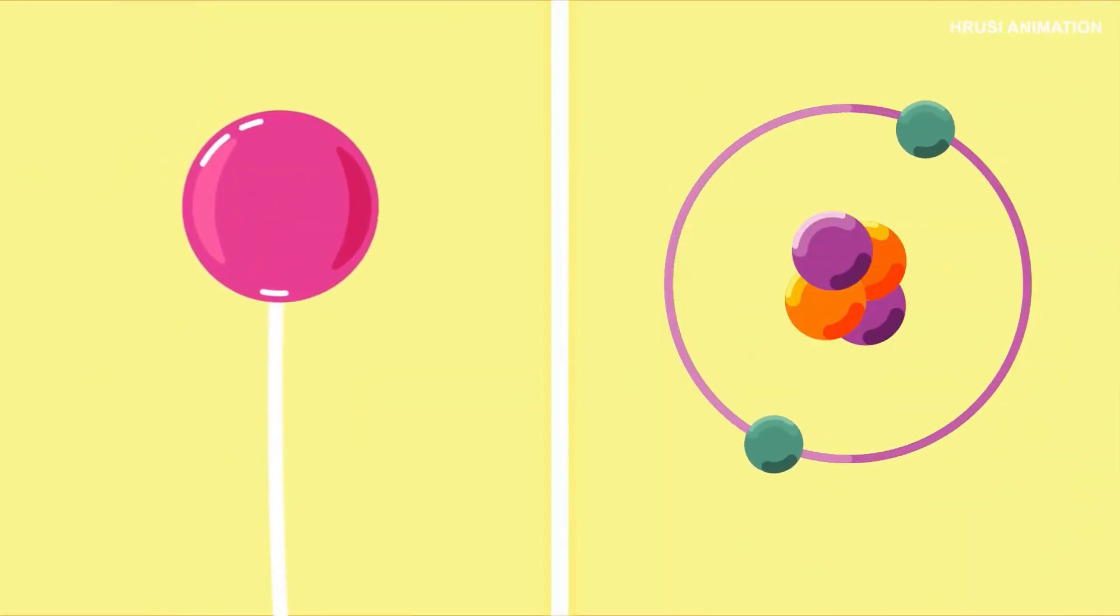Every matter in the universe is made from these three particles. For example, helium is made from two electrons, two protons, and one or two neutrons.